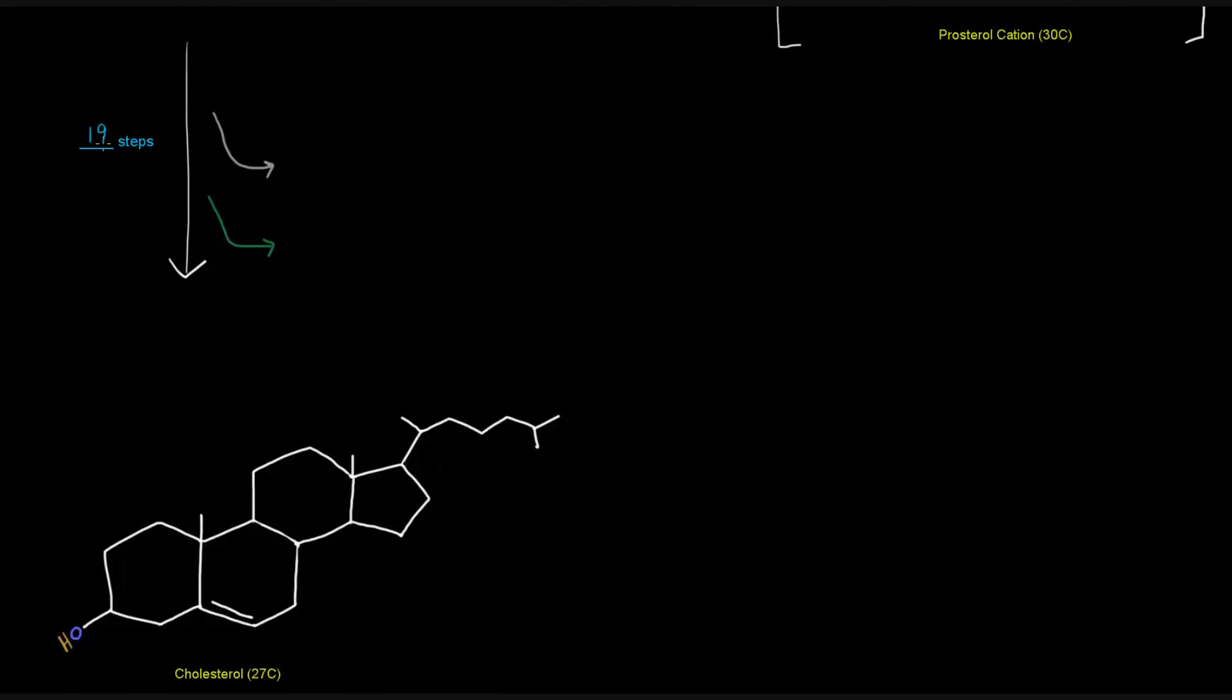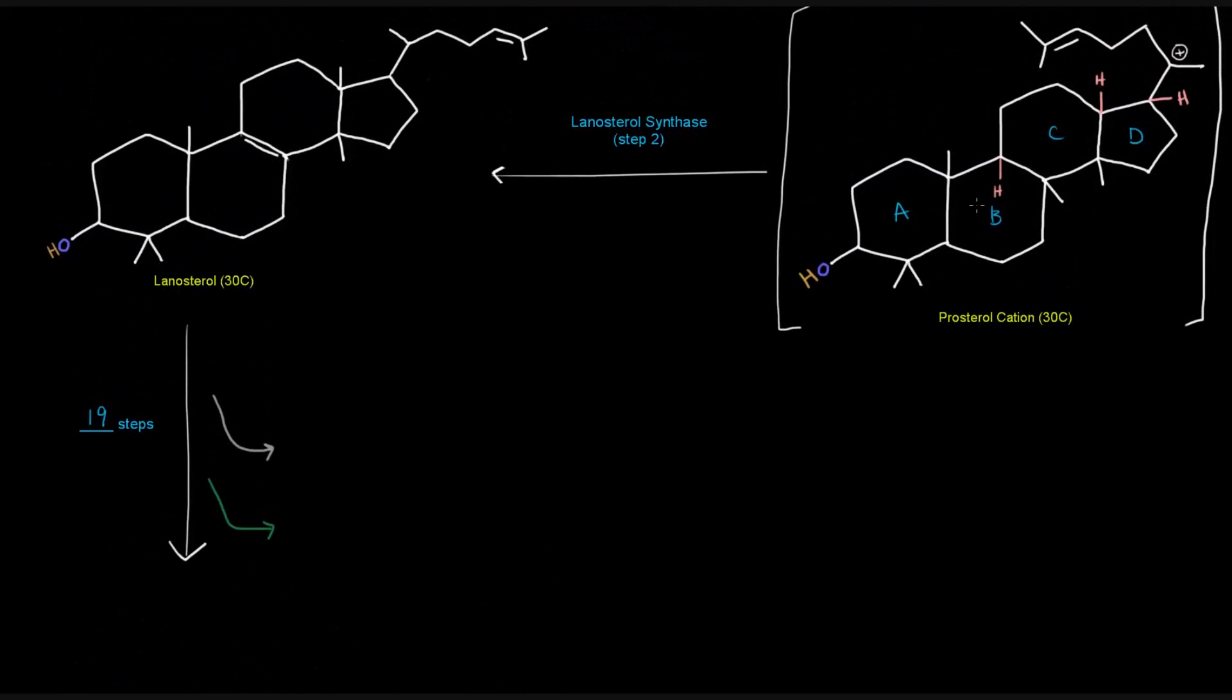And the way we're going to actually lose those three carbons, one of them comes off as a formic acid, which looks like this. So that's one carbon there. That's just that one carbon right there. That's one carbon. And there's also going to be two carbon dioxides that come off. So that's two carbons there.